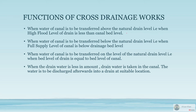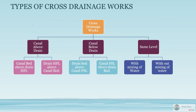The functions of cross drainage works involve passing water through different regions. I'll explain them using diagrams. The types of cross drainage works are: canal above the drain, canal below the drain, and same level. Canal above the drain means the drainage stream or river is passing below and the canal is placed above it.